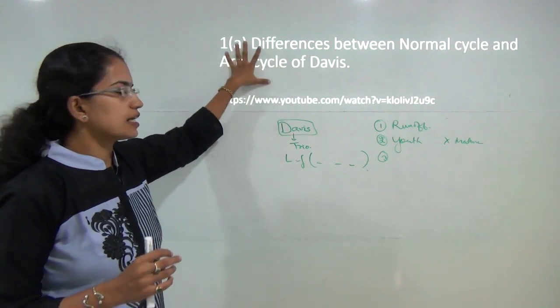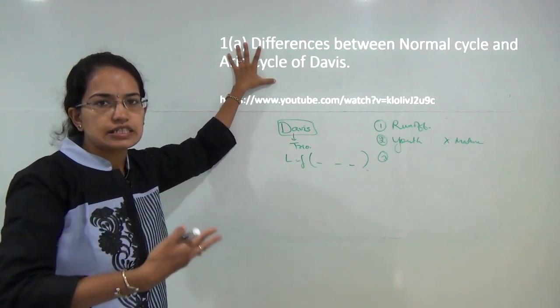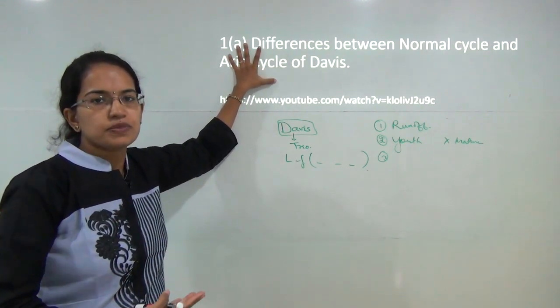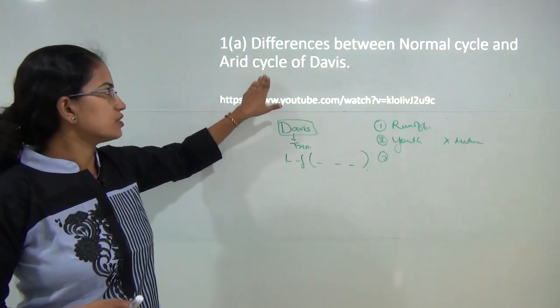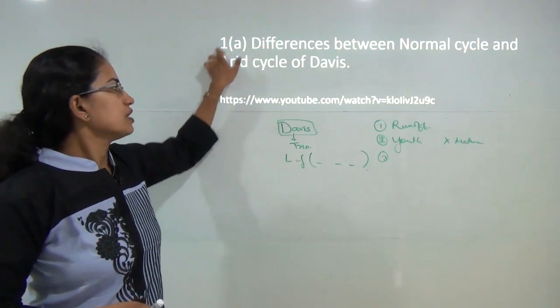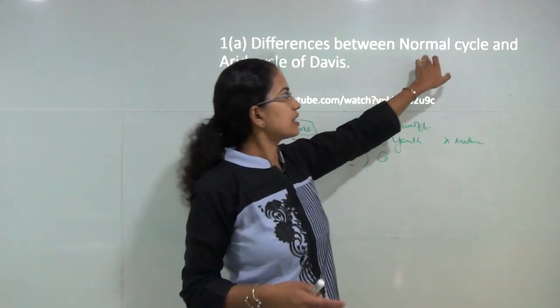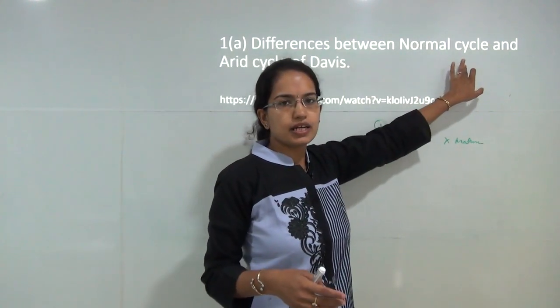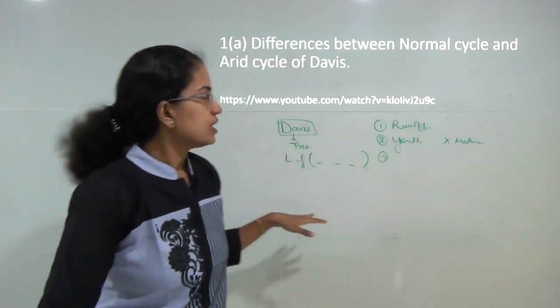Under the arid cycle, you would not have a continuous stream-fed system, which is a drawback for the arid cycle. Here the main element is wind, whereas under the normal or humid cycle the main element is water.